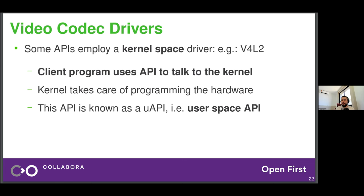Other video codec APIs like Video for Linux have basically no user space component. Apps like Chrome or Firefox make calls directly to the kernel, and the kernel driver handles everything — it's larger than what's needed for APIs like VA-API. The client program uses a UAPI — a user space API — to talk directly to the kernel, and then the kernel programs the hardware. The UAPI is an API that user space can use to tell the kernel how to set up and program the device to encode or decode video.